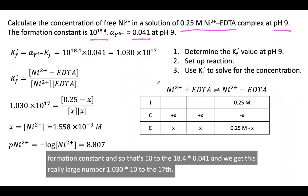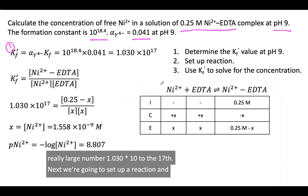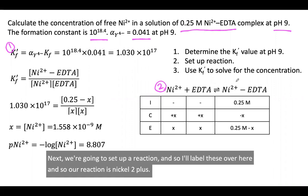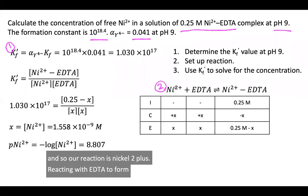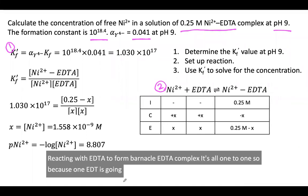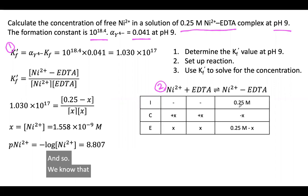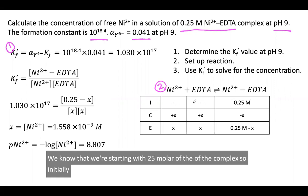Next we're going to set up our reaction. Our reaction is Ni2+ reacting with EDTA to form our nickel-EDTA complex. It's all one-to-one because one EDTA is going to wrap around one nickel ion. We know that we're starting with 0.25 molar of the complex, and initially we don't have any of the free nickel or free EDTA.